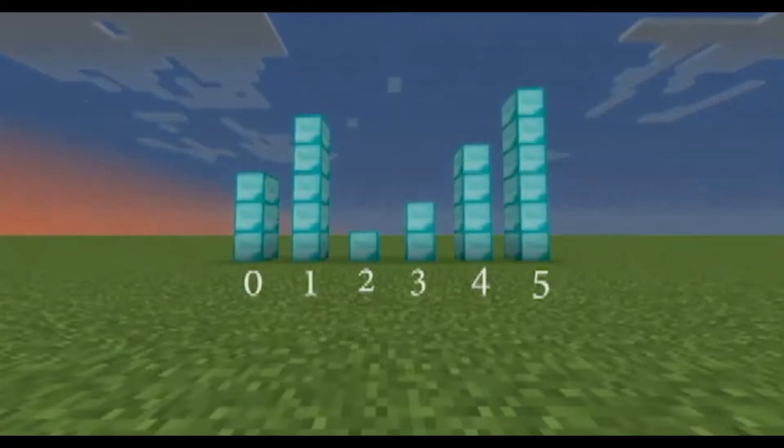In this video, we are going to be visualizing comb sort using Minecraft blocks. Here, I made an unsorted list of length 6. Throughout the animation, I will use gold blocks to represent the elements being compared.